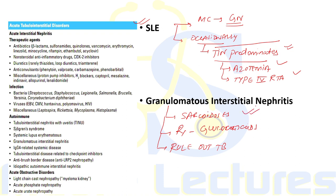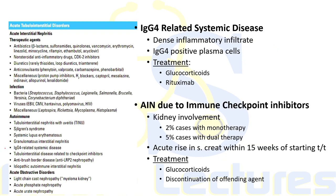Granulomatous interstitial nephritis is seen with disorders like sarcoidosis. Biopsy reveals chronic inflammatory infiltrate with granulomas and multinucleated giant cells. Good response with glucocorticoids is seen if started before the development of interstitial fibrosis and tubular atrophy. Tuberculosis should be ruled out before starting treatment, as it is also a rare cause of granulomatous interstitial nephritis.